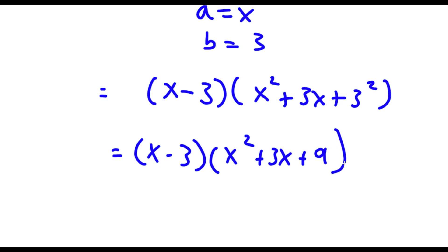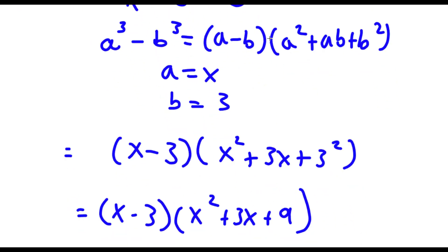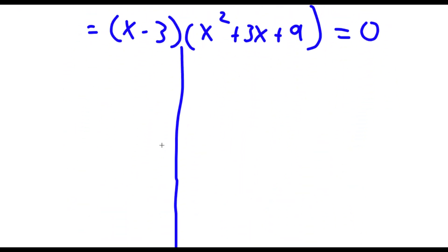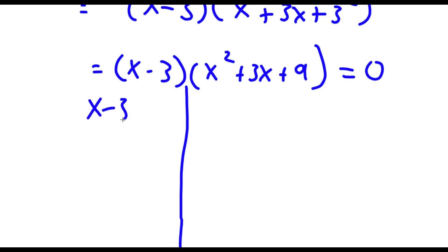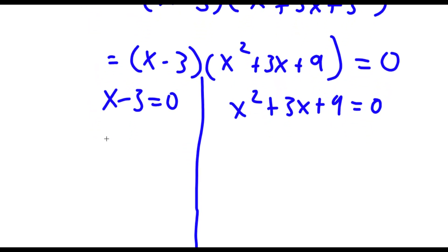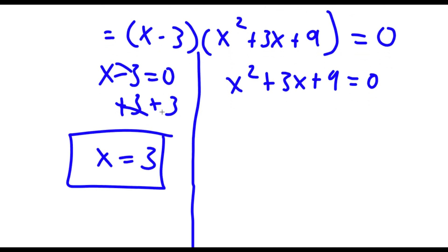Which is 9. And remember, this is equal to 0. So now this gives me two equations. I have x minus 3 is equal to 0, and I also have x squared plus 3x plus 9 is equal to 0. So for x minus 3 equals 0, all I have to do is add 3 on both sides. These two cancel out, and I'm left with x is equal to 3. So this is one solution.